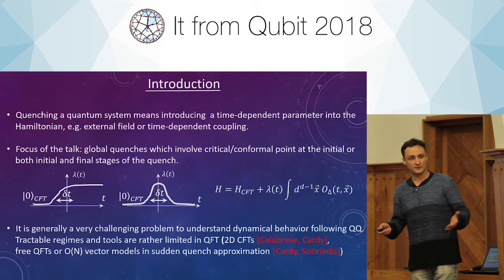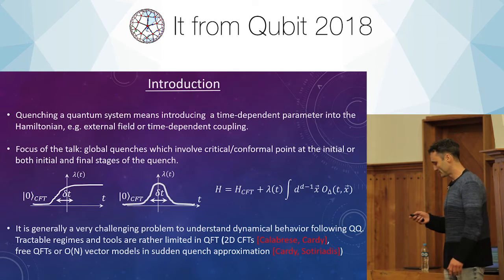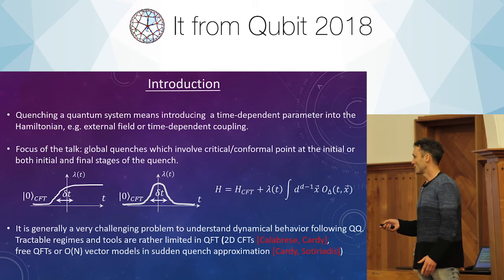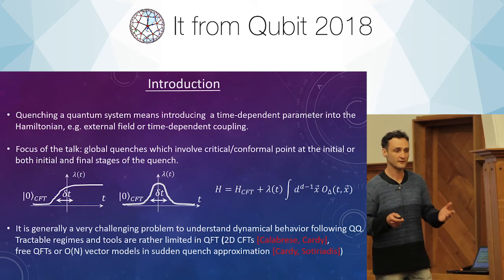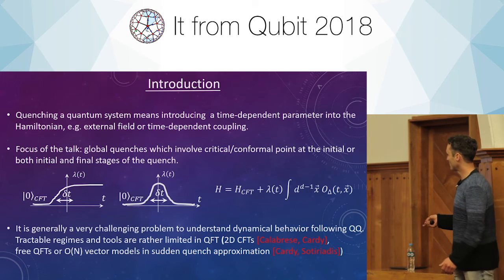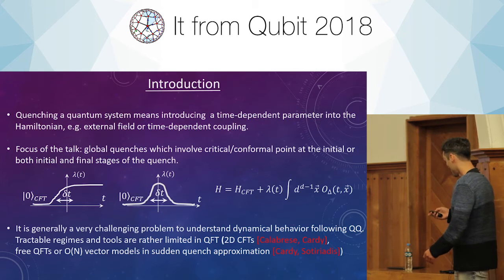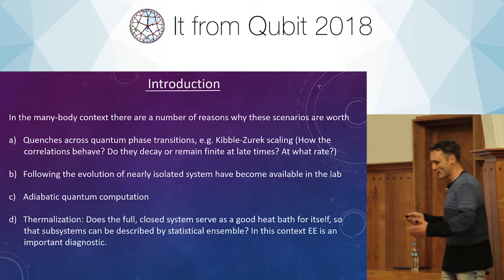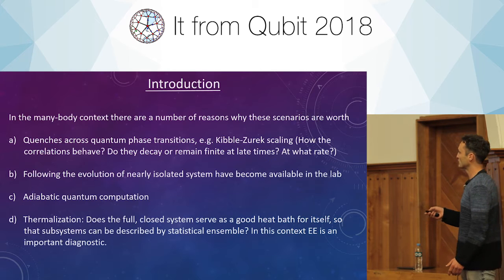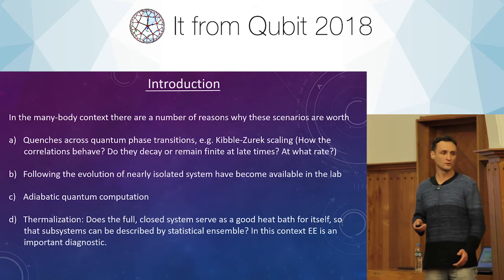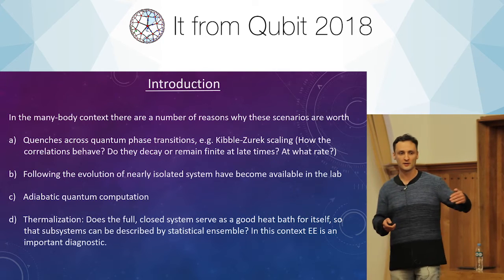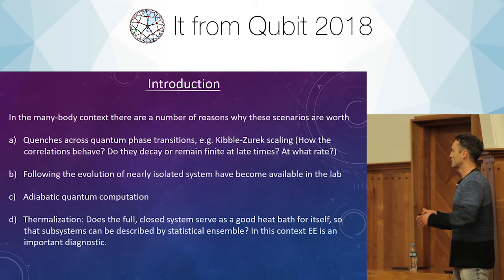In general, this time-dependent problem is very challenging and it's hard to understand the dynamics. Some regimes are tractable in two-dimensional conformal field theory, and there are also tractable regimes in free field theories or large-N vector models in the limit of the sudden quench approximation. So why bother, if this is such a complicated system with complicated dynamics? Here is a list of reasons. The first has to do with the Kibble-Zurek mechanism: you study the dynamics when you pass through the critical point and ask various questions about how correlation functions decay in time or remain finite and at what rate.